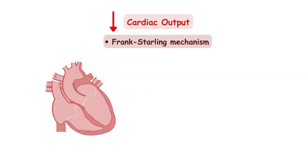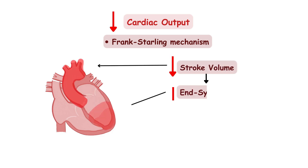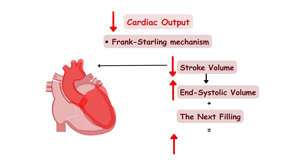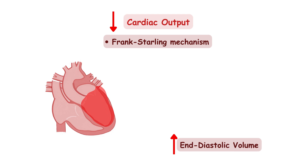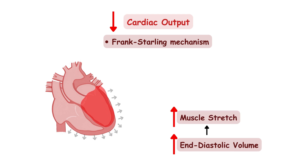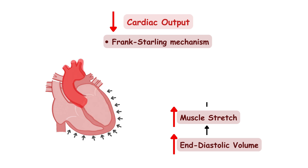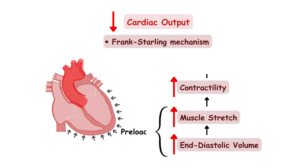The Frank-Starling mechanism initially supports heart function as follows. Since stroke volume is reduced, the amount of blood left within the ventricle increases. Because of this, the ventricle fills with more blood, leading to an increased end-diastolic volume — the total volume of blood within the ventricle before it contracts. Because of that, the myocytes stretch more. The more the muscle cells stretch, the more force for contraction is created. So, since increased contractility and increased preload affect stroke volume, the Frank-Starling mechanism enhances cardiac output and supports the work of the heart.